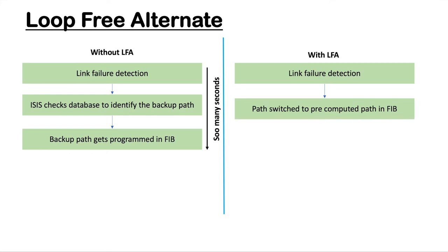LFA calculates a path at the time of forming adjacency itself. It has a primary path and a repair path, and that repair path gets into the data plane along with the primary path and always remains there. It's not used because the primary path is still the best path. As soon as the router detects the primary path has failed, the backup path — already in the data plane — takes precedence and starts forwarding packets. Most vendors claim this is less than 50 milliseconds, and you won't see a single packet loss even with voice applications having strict latency constraints.